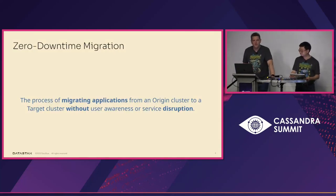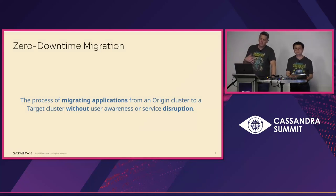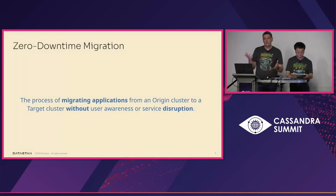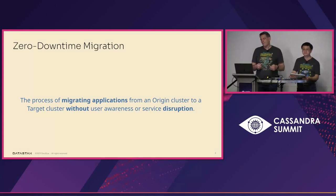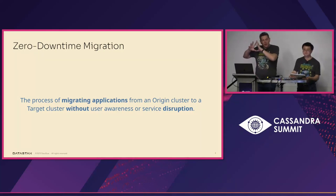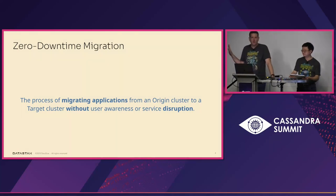We want to define it from the perspective of a user or application developer — this is the process of migrating applications from an origin cluster to a target cluster without user awareness or service disruption. If you're on a banking app, a social site, a movie streaming service, or a game, you shouldn't see any blip or be notified that something is happening at 3:30 this afternoon. There might be rolling restarts of your application servers, but from a user's perspective, their service should remain predictable and performant.